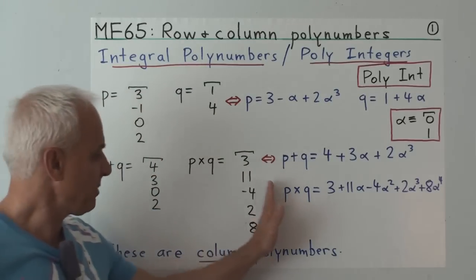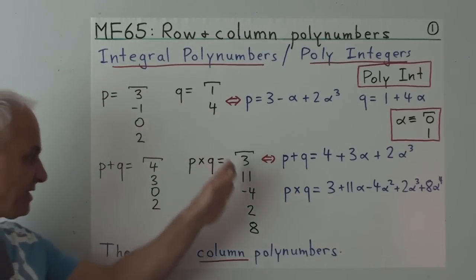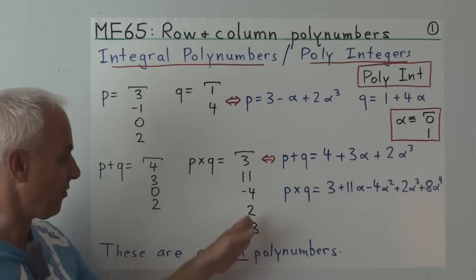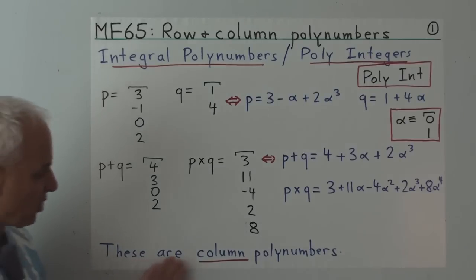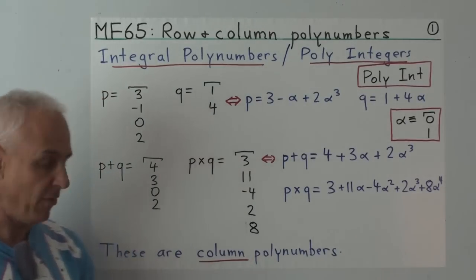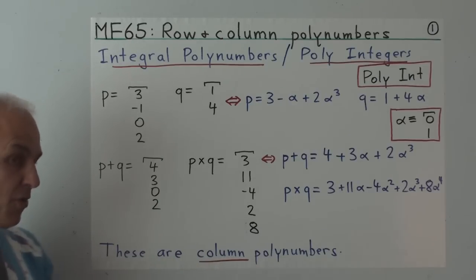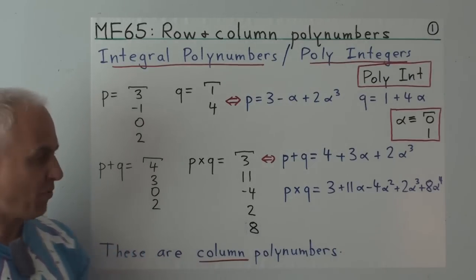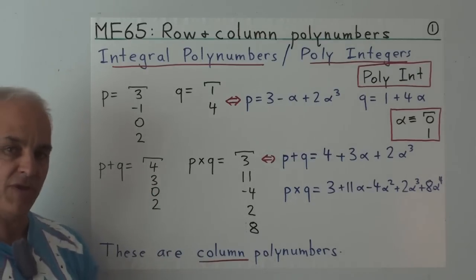With this approach, it's more like computer science — we're working with the essential aspect of the polynomials, namely the coefficients themselves. We might call these things column polynumbers. This is a new terminology, because we're shortly going to consider variants where we write things not in columns but across in rows.